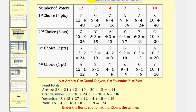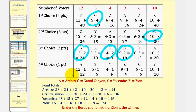Next, we'll find the points for the Grand Canyon, so we'll find all of the G's. First row, we have a G here. Second row, we have a G here. Third row, we have a G here, here, and here. And the fourth row, we have a G here. So the Grand Canyon receives twenty plus thirty plus twenty-four plus eight plus eighteen plus six points, or one hundred six points.